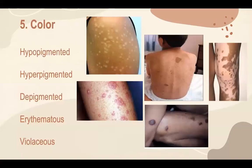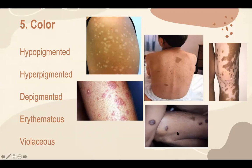The color of a lesion is also very important. A lesion could be hypopigmented, such as in tinea versicolor. It could also be hyperpigmented, such as in this picture of café-au-lait macules and patches. A lesion could be depigmented, meaning there is absolutely no color in the lesion and it appears chalky white — a very characteristic description of vitiligo lesions. A lesion could be erythematous or red, and a lesion could be violaceous, which is a characteristic description of Kaposi sarcoma lesions, such as in this picture.